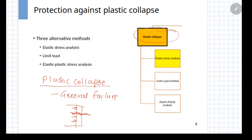There are three different ways of doing a plastic collapse check. The first one is plastic stress analysis, the second is limit load analysis, and the third is elastic plastic analysis. Here we are discussing only the elastic stress analysis mode, which is a bit older and has been in use for more than 50 to 60 years, and hence it is very widely used for various applications.